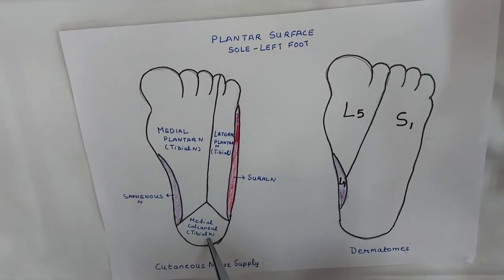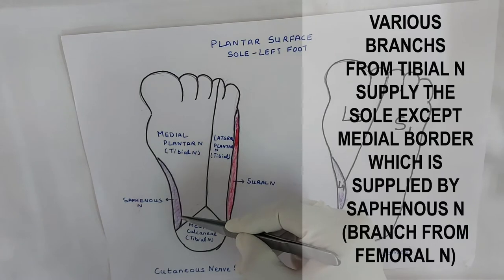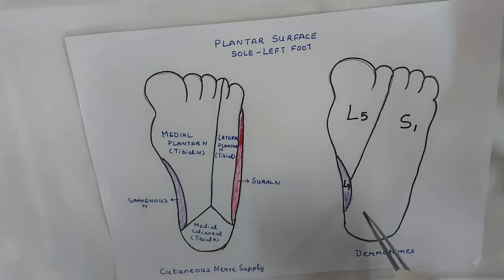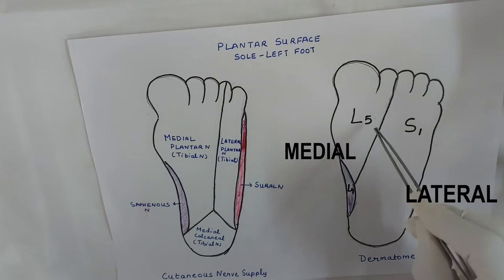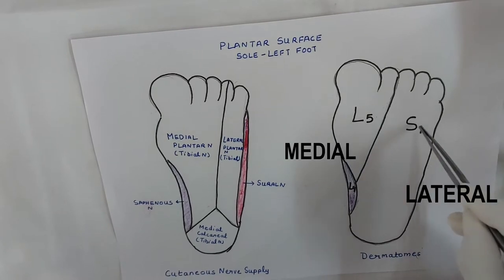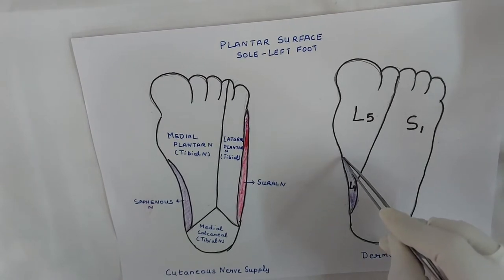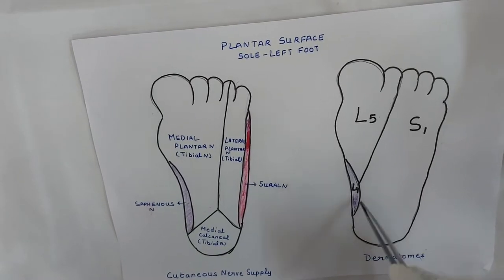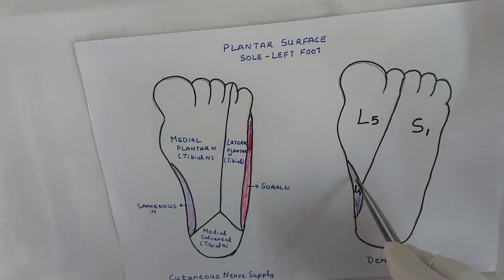So branches of the tibial nerve supply the sole except at the medial border, which is supplied by the saphenous branch of the femoral nerve. Regarding the dermatomes over the sole of the foot, the medial part is supplied by the L5 segment, and the heel and lateral part by the S1 segment of the spinal cord, except over a part of the medial border which is the L4 segment. So the dermatomes are mainly L5 and S1, except near the medial border which is L4.